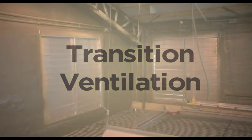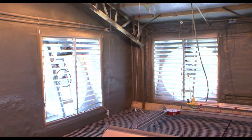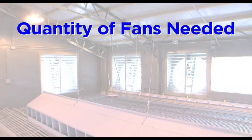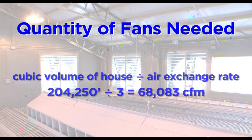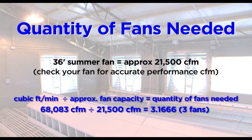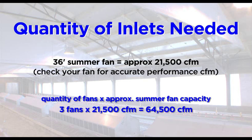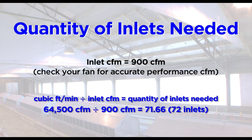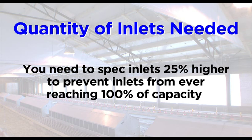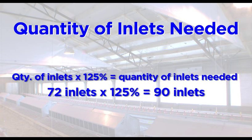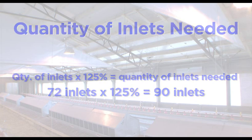Let's talk about using TJP inlets with transition ventilation. During transition ventilation, fan volume should equal 1 air exchange every 3 minutes. To determine the number of fans needed, take the cubic volume of the house and divide by 3, then divide by how much air one summer fan can displace in cubic feet per minute. Always round up or down to the nearest whole number — a summer fan equals 21,500 CFM. To determine the number of inlets needed, take the number of fans and multiply by the amount of air displaced by one summer fan in CFM, then divide by inlet CFM. Allow 900 CFM per inlet. You need to spec inlets 25% higher to prevent inlets from ever reaching 100% of capacity. 72 inlets times 125% equals 90 inlets.